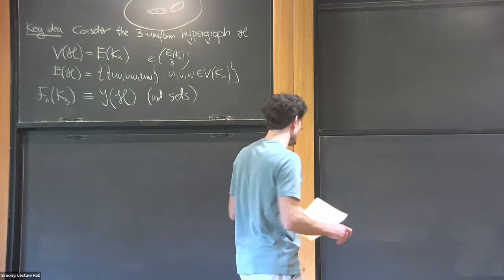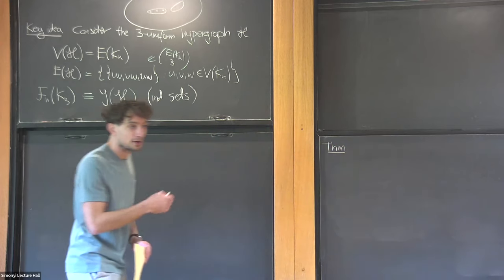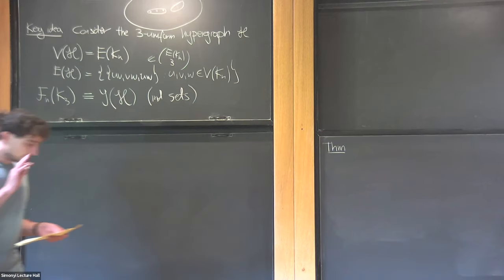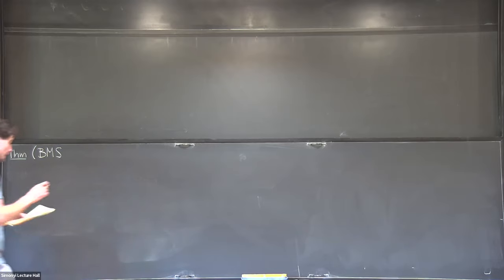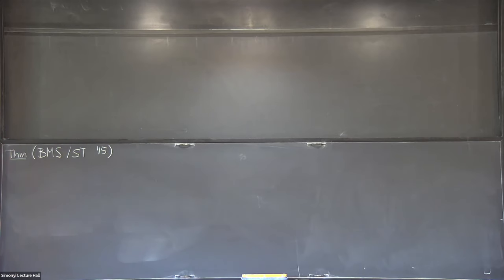In the case of 2-uniform hypergraphs, this is significantly easier — there are works of Kleitman-Winston from the 1980s and Sapozhenko from the 1990s, who also coined the term 'containers'. The first general 3-uniform and higher uniformity case was established by Balogh, Morris, and myself, and by Saxton and Thomason around 2012, with papers appearing in 2015.